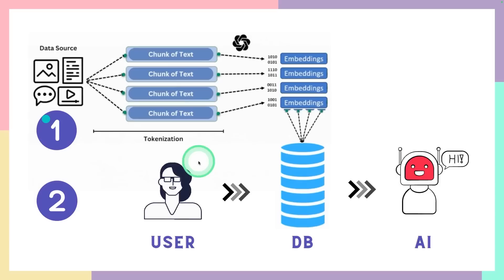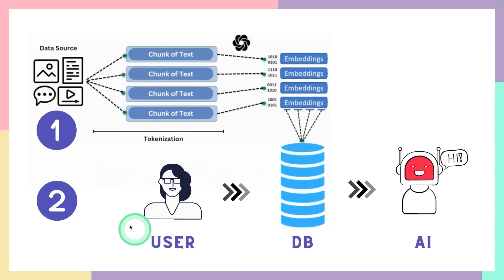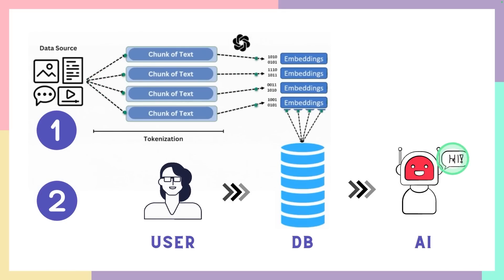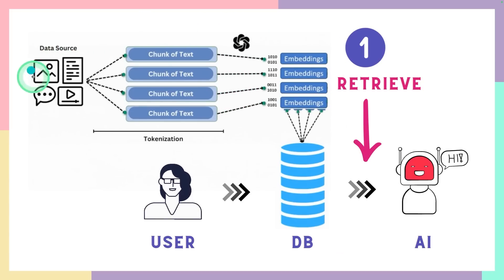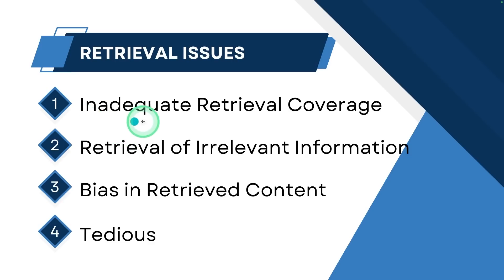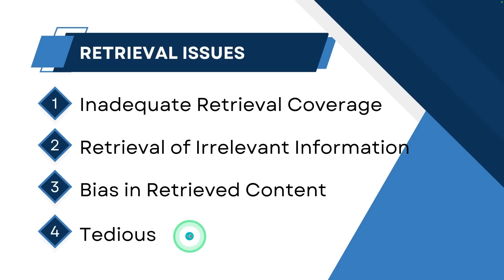What are the advantages of DSPY? When you take a RAG application, when you ingest the data, the data gets automatically chunked into smaller bits, then converted to embeddings and stored in the vector database. In step two, when the user asks a question, the relevant information is retrieved and sent to the large language model as context to generate the final response. The area where issues happen is mainly in the retrieval step, considering we have already optimized the ingestion pipeline. Issues include inadequate retrieval coverage, retrieval of irrelevant information, and bias in retrieval content. We are able to fix these individually, but it's going to be more tedious, and it varies with each data type and context.